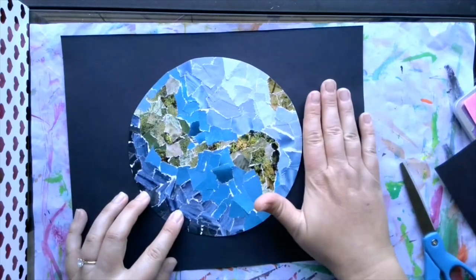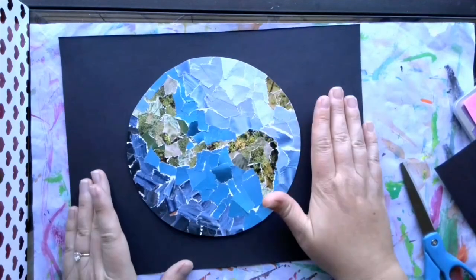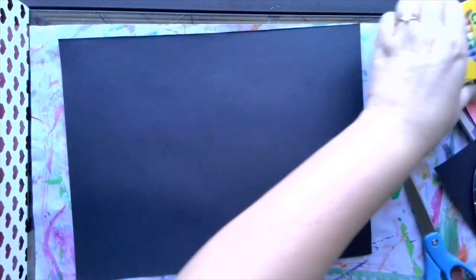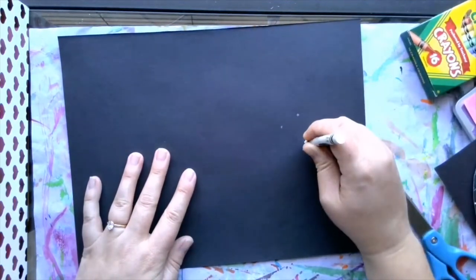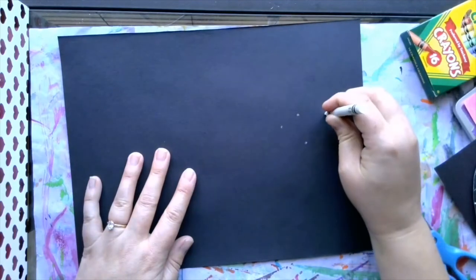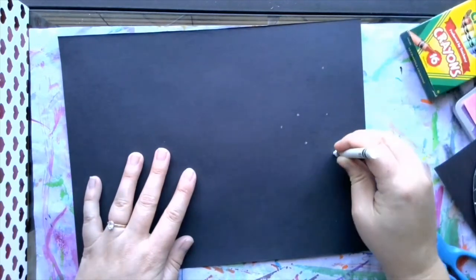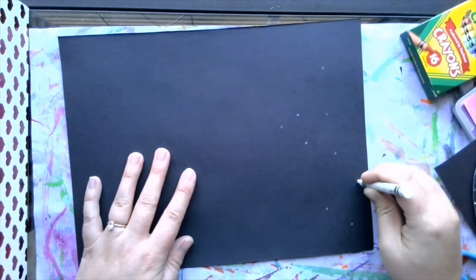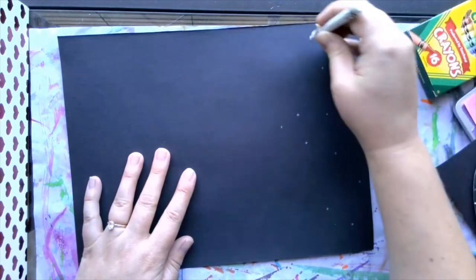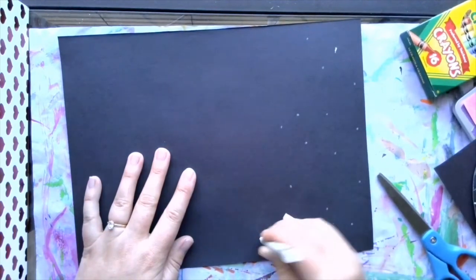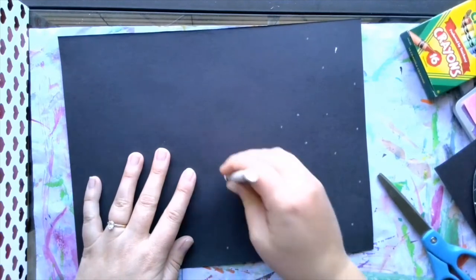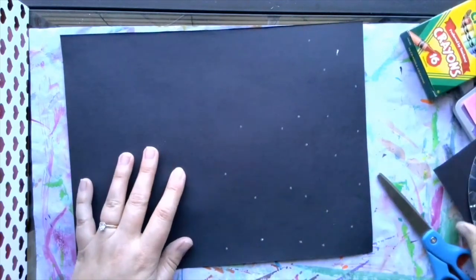If you want to add stars behind your Earth, you can do that. If you want to leave it just black, that's fine. Totally up to you. I recommend using a white crayon if you want to just add some little stars by pushing your crayon down and twisting it to make little pinprick stars around your paper. They're light, so they won't be so overpowering. If you have maybe a silver gel pen, that would also be a great way to add little dots of stars around your Earth. Let me show you what that would look like.